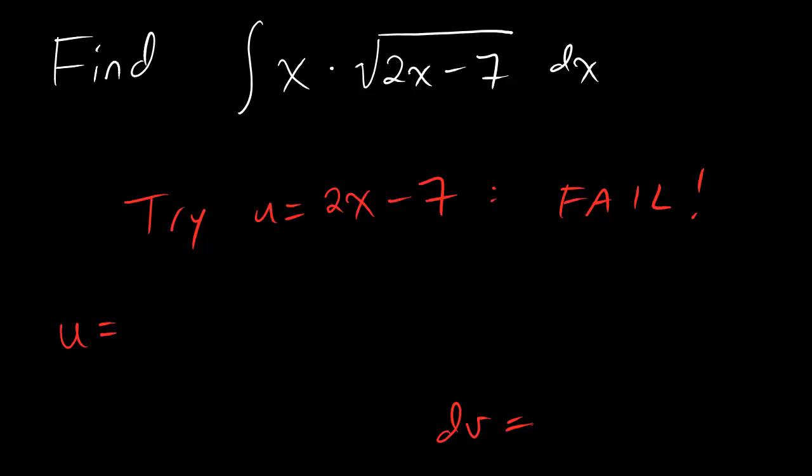We want the u to be something where the derivative becomes easier. Now, we have two pieces to choose from. We've got the x and we've got the square root thingy. If we take the derivative of x, then that definitely becomes easier. The derivative of x is just 1. So taking the derivative of x will make our lives easier. That seems like a good choice. Now, how about the derivative of the square root function? That doesn't seem like it will become easier. In fact, that might even become harder.